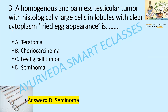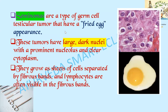A homogeneous and painless testicular tumor with histologically large cells in lobules with clear cytoplasm — 'fried egg' appearance. Options: teratoma, choriocarcinoma, Leydig cell tumor, or seminoma? The answer is option D, seminoma. Seminomas are a type of germ cell testicular tumor with a fried egg appearance. These tumors have large dark nuclei with a prominent nucleolus and clear cytoplasm. They grow as sheets of cells separated by fibrous bands, and lymphocytes are often visible in the fibrous bands.